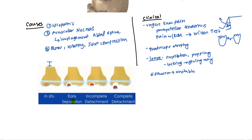Stage two is early separation where only certain areas are broken off but not completely. Stage three is incomplete detachment - completely broken off but still sitting in the crater. Finally stage four is complete detachment where it falls off, and that's when you have the complications of popping, locking, and giving way.